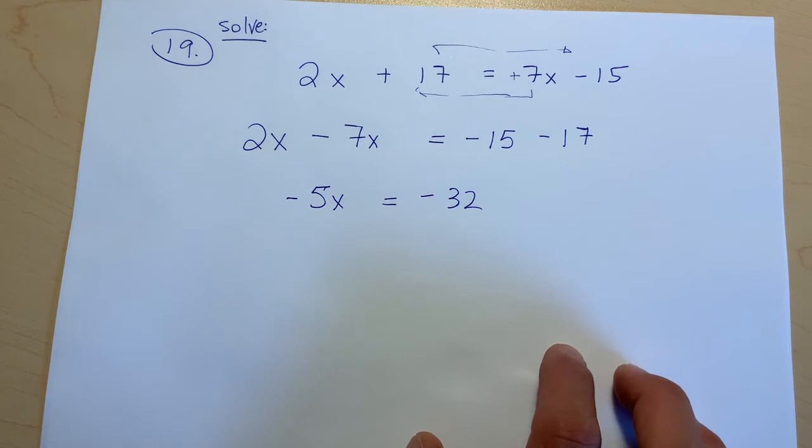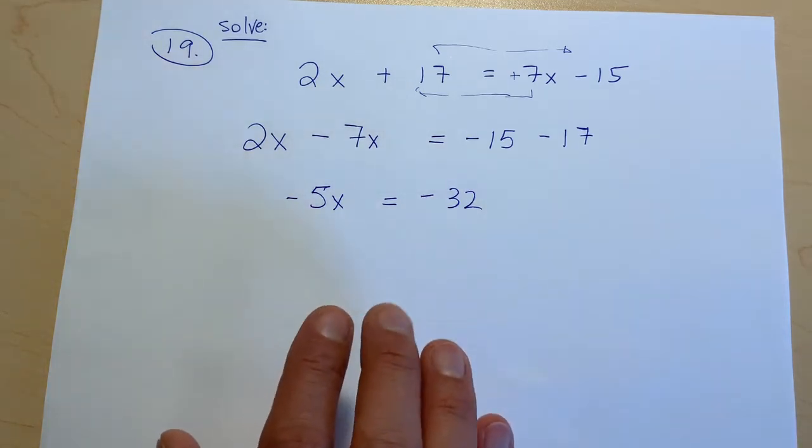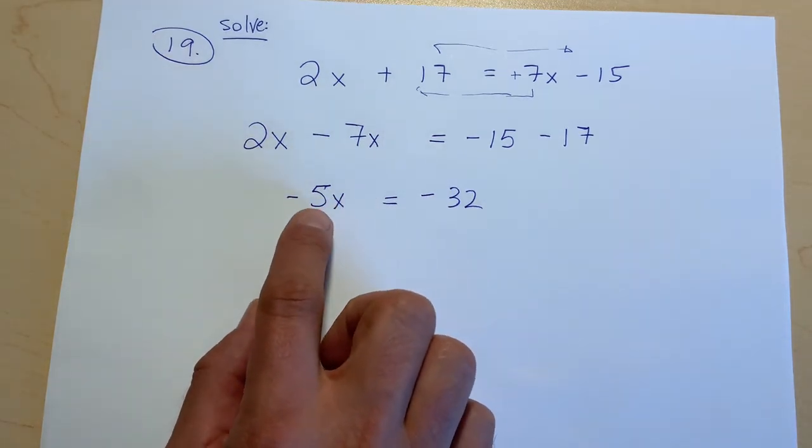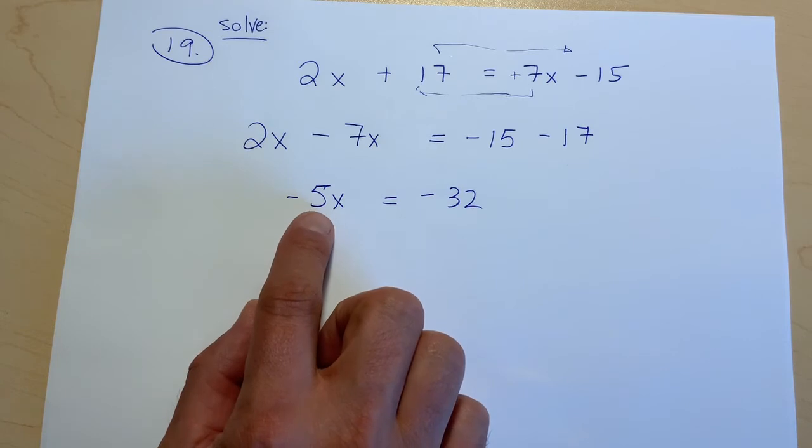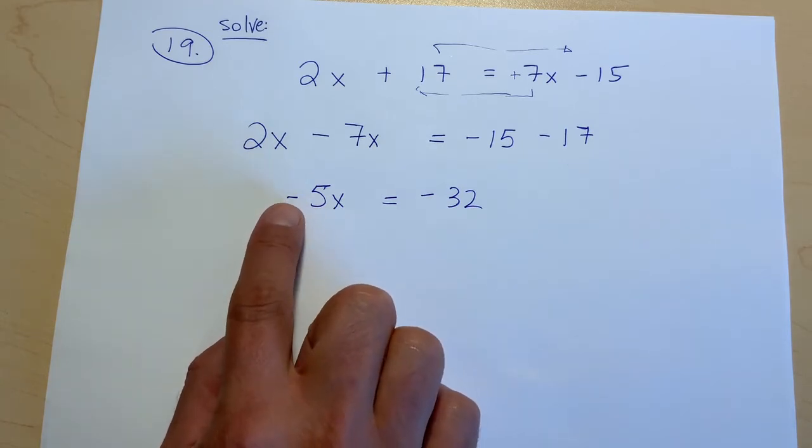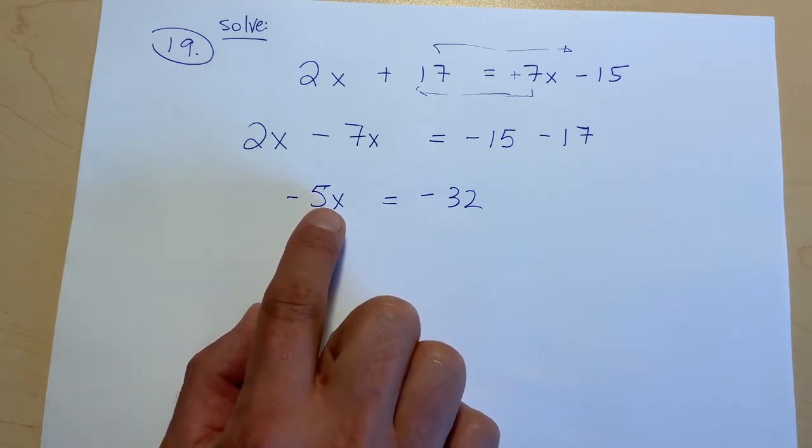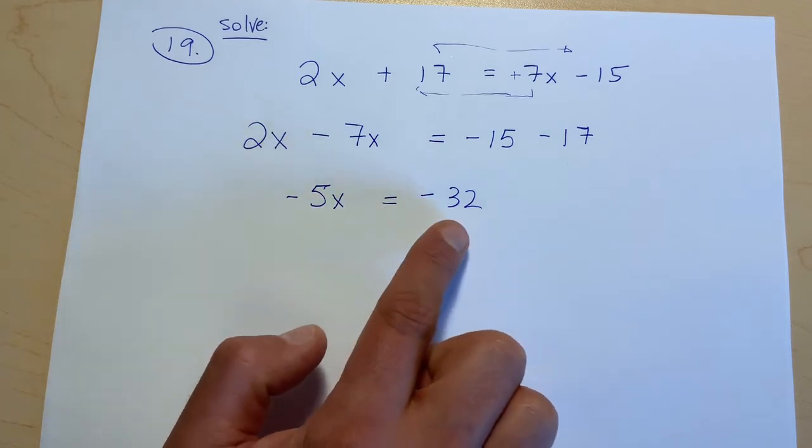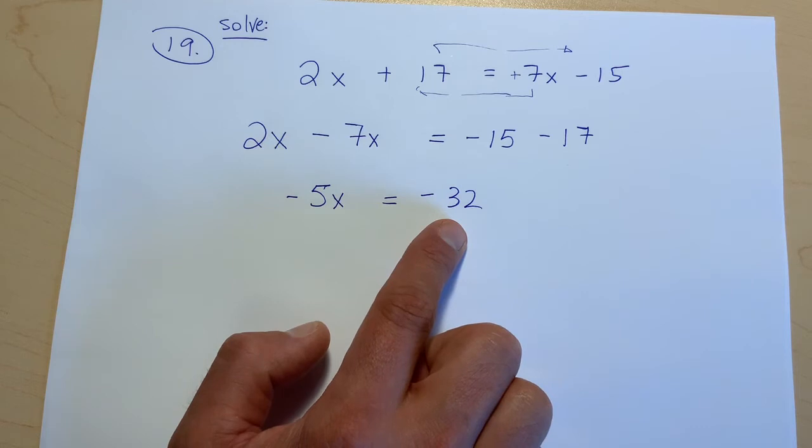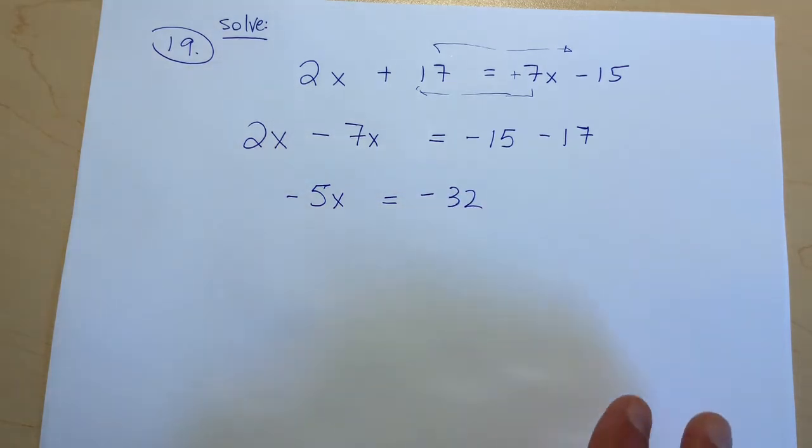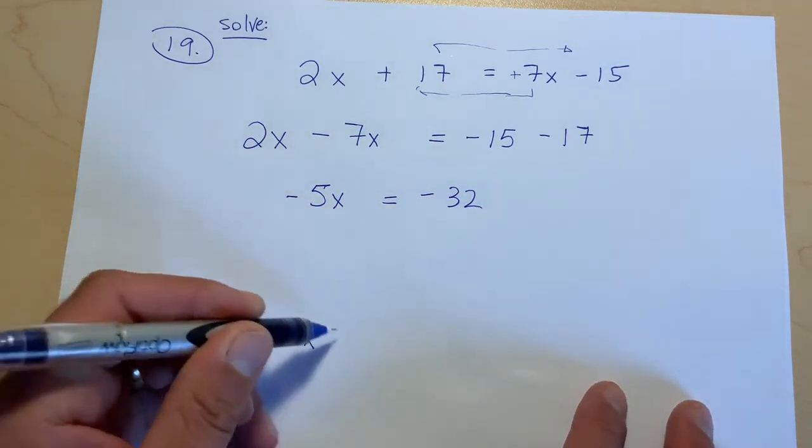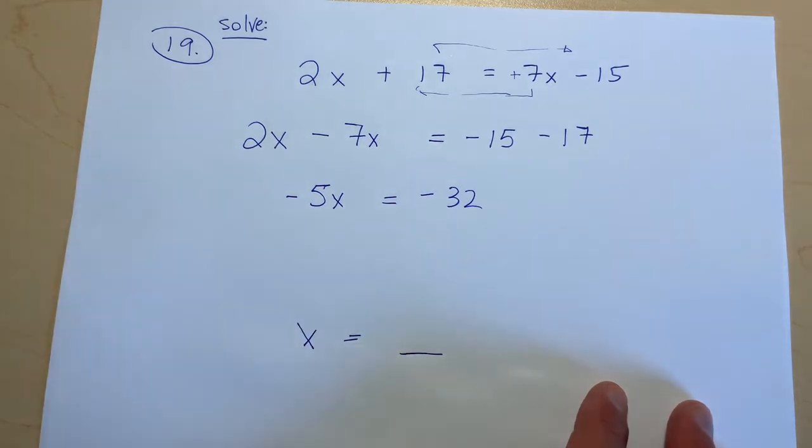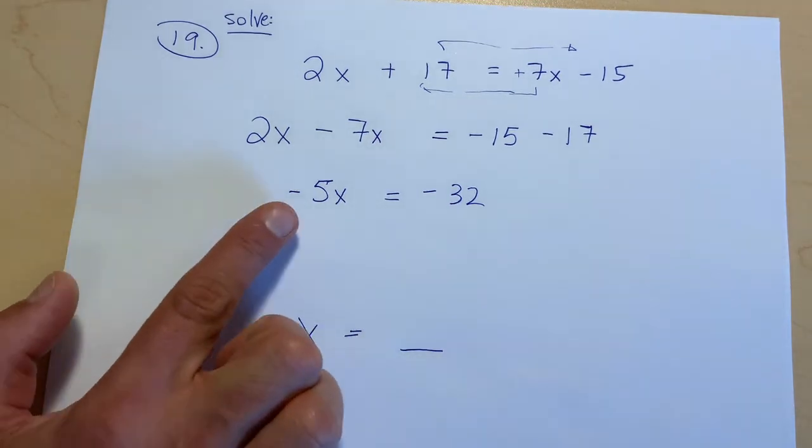Okay, great. So we've sort of cleaned up this question. Now, if we look at what this term is saying, this term is saying negative 5 times whatever x is is going to equal negative 32. Now I want the answer to just say like, x is the number, right? So I don't want this 5 here. This negative 5 is kind of in the way.